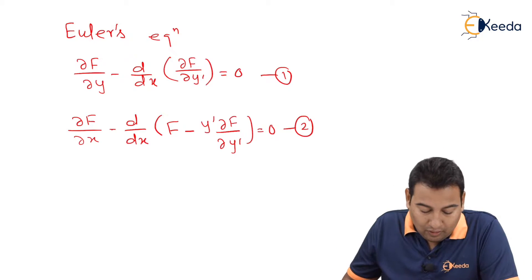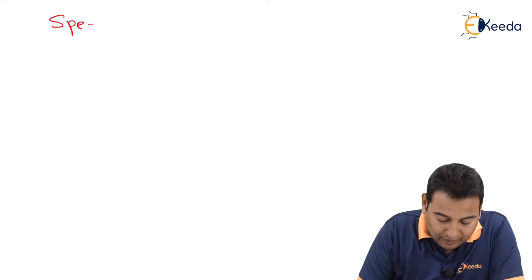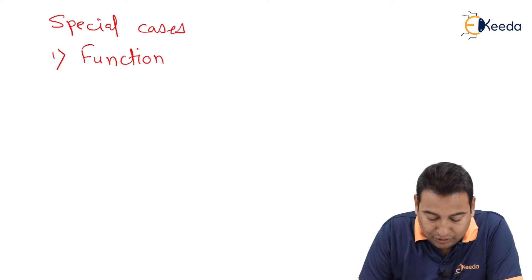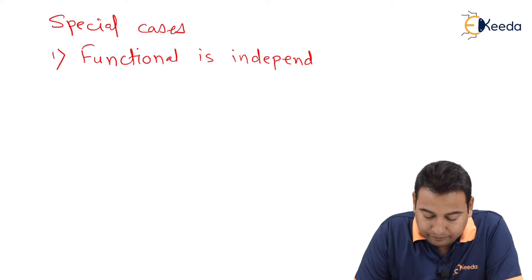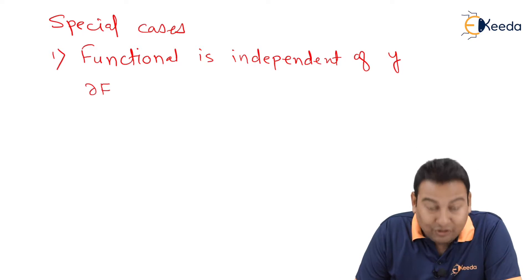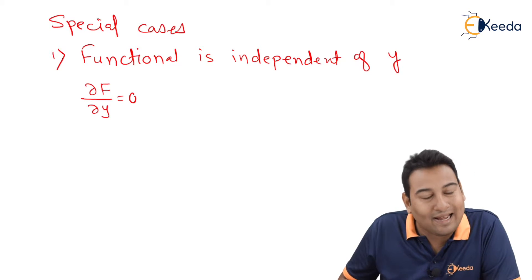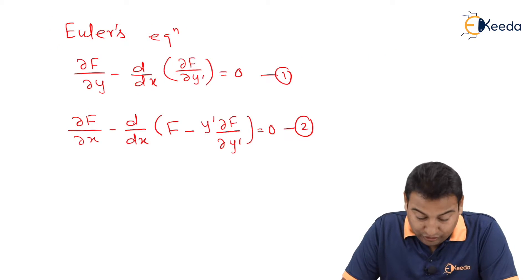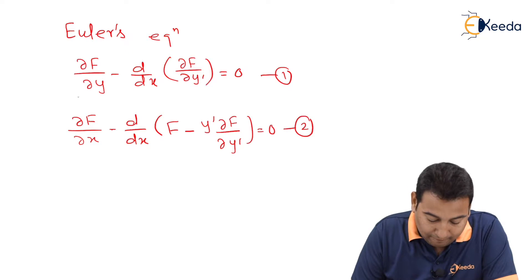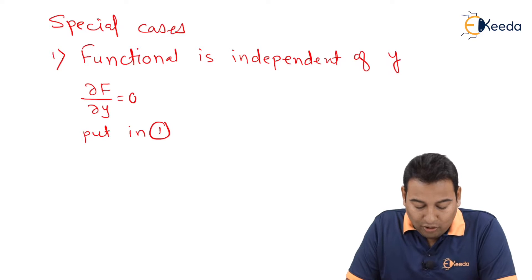Friends, these are the two solutions for the given integration. Now there are three special cases to consider. The first special case is when the functional F is independent of y. If F is independent of y, then ∂F/∂y = 0, because when you differentiate with respect to y, the answer is zero. Now we have two options — we can choose equation number one or two. Since ∂F/∂y appears in equation number one, let's substitute there.